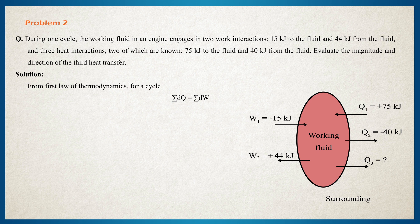From the first law of thermodynamics for a cycle, the summation of DQ is equal to the summation of DW. So Q1 plus Q2 plus Q3 is equal to W1 plus W2. Substituting: 75 minus 40 plus Q3 is equal to minus 15 plus 44.